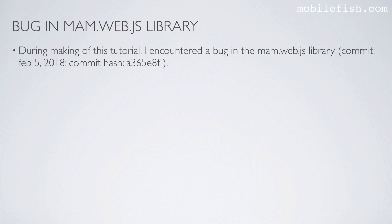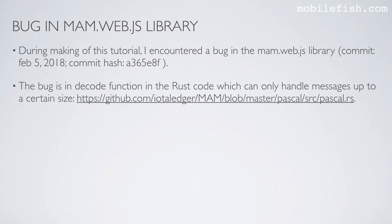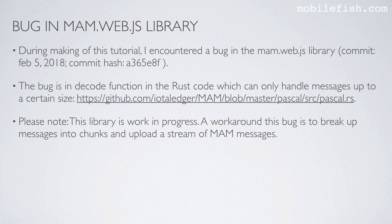I was using the 5 February 2018 commit version. The bug is in the decode function in the Rust code which can only handle messages up to a certain size. This library is work in progress. A workaround for this bug is to break up messages into chunks and upload a stream of MAM messages.